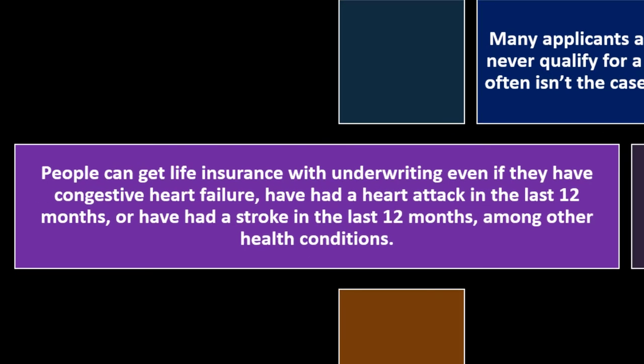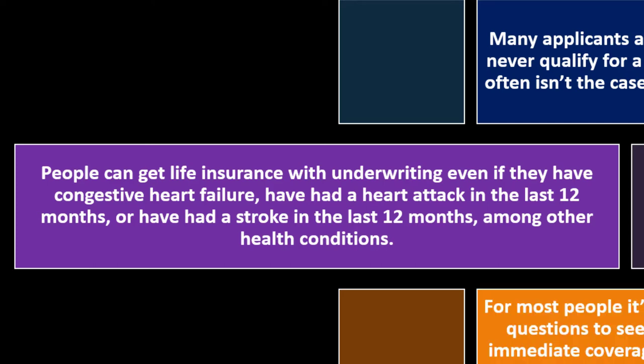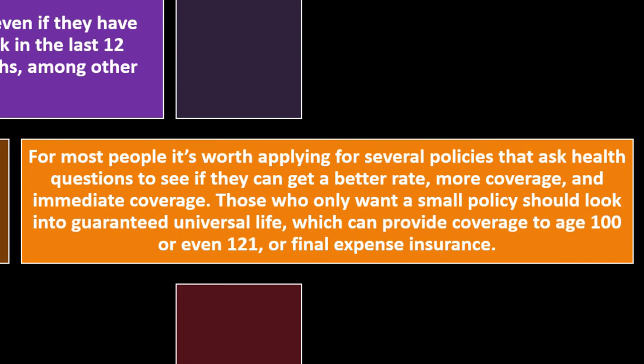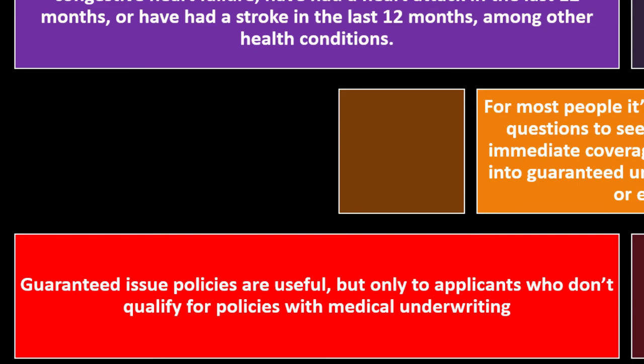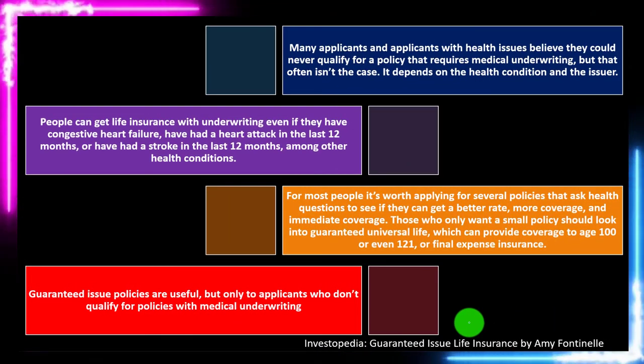People can get life insurance with underwriting even if they have congestive heart failure, had a heart attack in the last 12 months, or had a stroke in the last 12 months, among other health conditions. For most people, it's worth applying for several policies that ask health questions to see if they can get a better rate and immediate coverage. Guaranteed issue policies are useful, but only to applicants who don't qualify for policies with medical underwriting — so check that first.